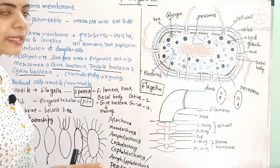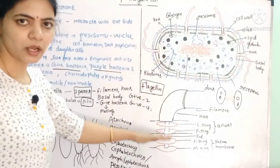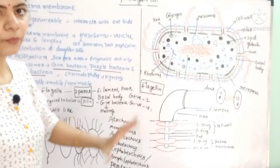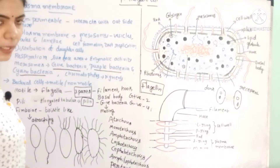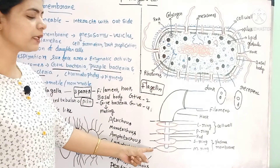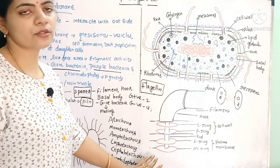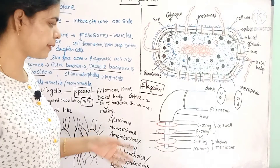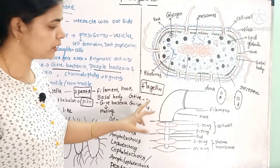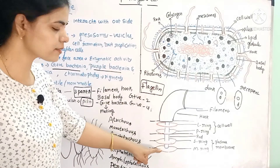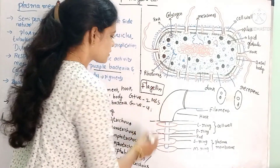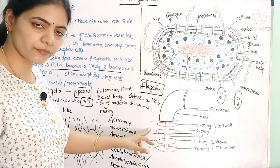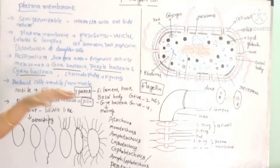The basal body has two pairs of rings — an outer pair of rings and an inner pair of rings. The inner pair consists of the M ring and S ring. The outer pair consists of the P ring and L ring — four rings total. Gram positive bacteria have only two rings (M and S rings), because they lack the outer lipopolysaccharide membrane, so the L and P rings are absent. Gram negative bacteria have all four rings.